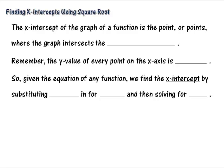The first one is that the x-intercept of a graph of a function is the point, or it could be multiple points, where the graph intersects the x-axis. Pretty simple. Pretty similar to the y-intercept that we looked at with our linear functions in the beginning of quadratics. The second thing we want to look at is we want to remember that the y-value of every point on the x-axis is 0.